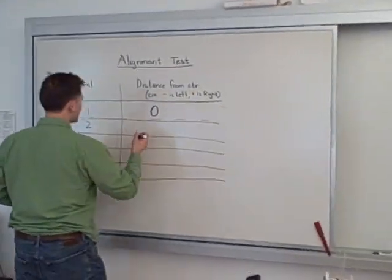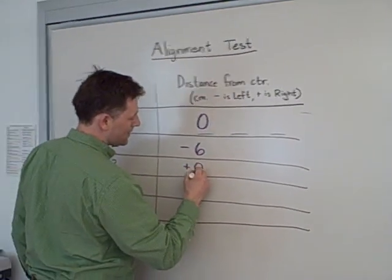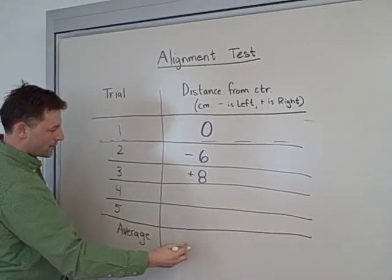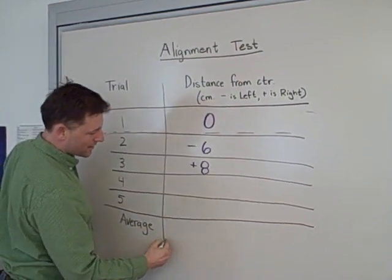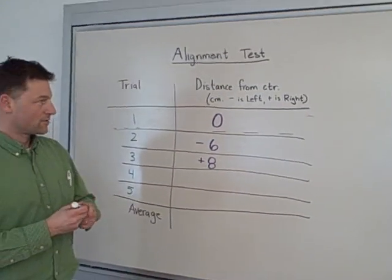So you would eventually write down all your data. Let's say this was a negative six, and this was a positive eight. You'll add all those up, divide by five, and you actually come up with an average that tells you how straight your car goes.